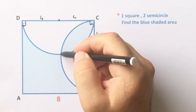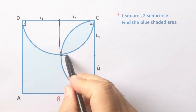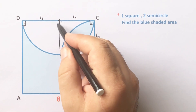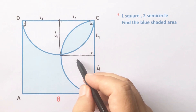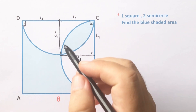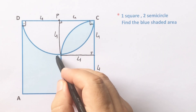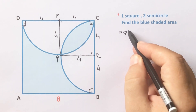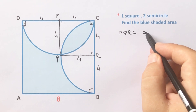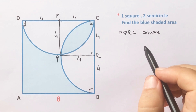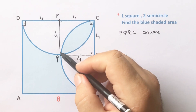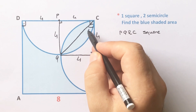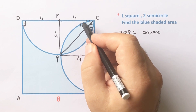Let's draw a perpendicular line. This length is 4 units and this length is also 4 units. Let's call these points P, Q, R. Notice that PQRC is a square. Therefore, if you connect points Q and C like this, here must be 45 degrees because of the square.